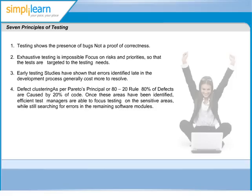The fourth principle of testing uses the Pareto principle. As per Pareto's principle or the 80-20 rule, 80% of defects are caused by 20% of causes. Once these causes have been identified, efficient test managers will be able to focus testing on the sensitive areas, while still searching for errors in the remaining software modules.